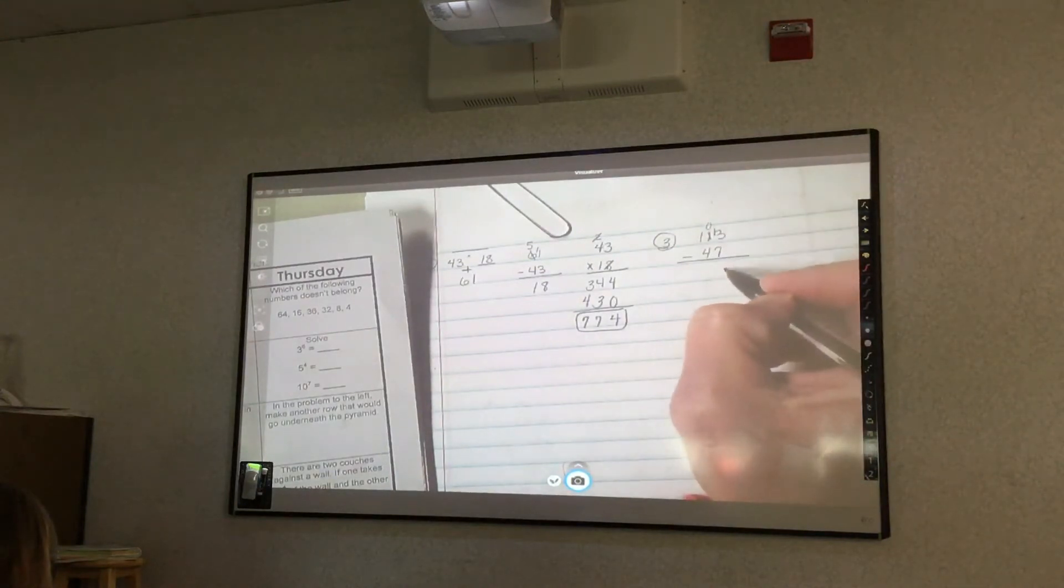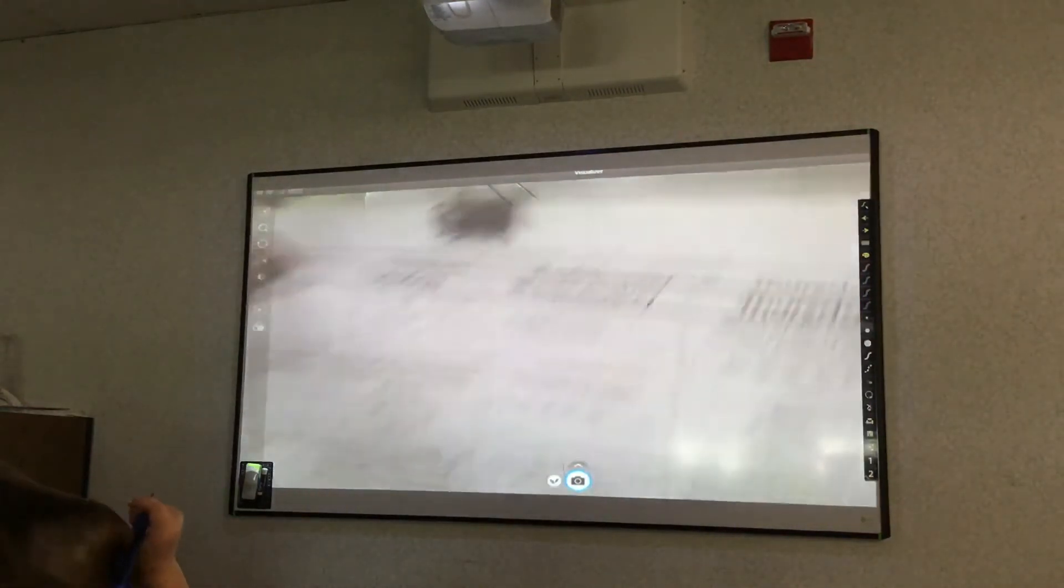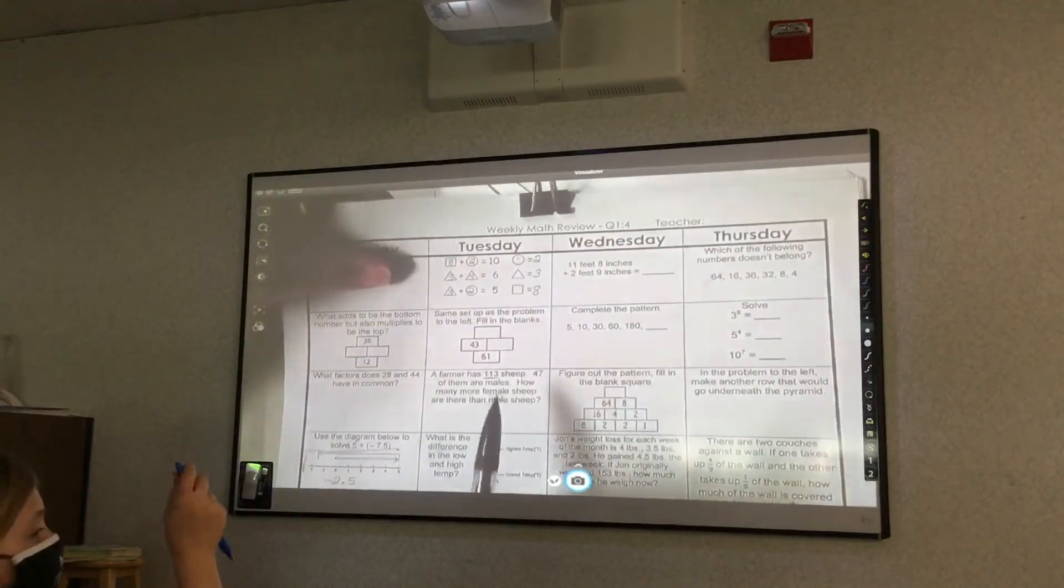13 minus 7? 6. 10 minus 4? 6. So now I know there's 66 females. But that's not my answer.